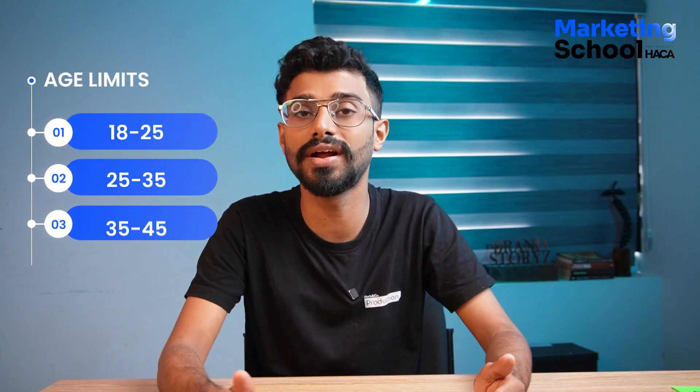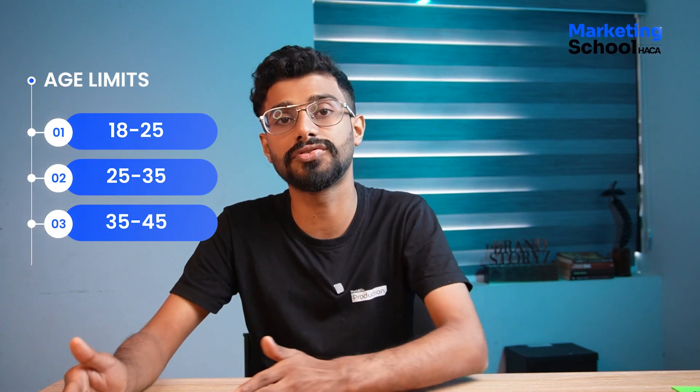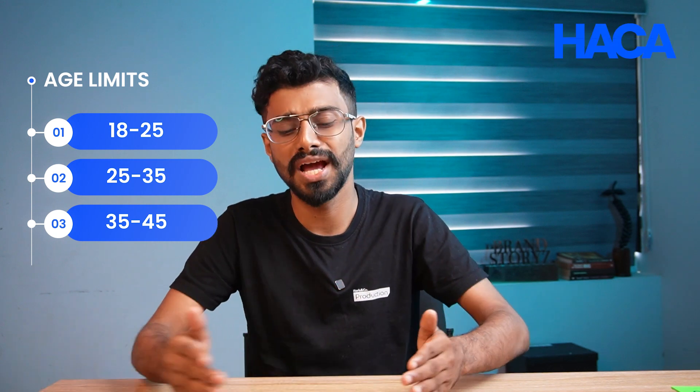In the demography section, you need to ask yourself: what is the age limit of my customer? For example, 18 to 25, 25 to 30, or 18 to 40 — what are the age barriers of my customer? There are also chances that you might have multiple buyer personas, so you need to define them individually. For example, buyer persona 1 with an age limit of 18 to 20, and buyer persona 2 with a different age range for that product.